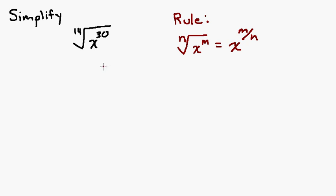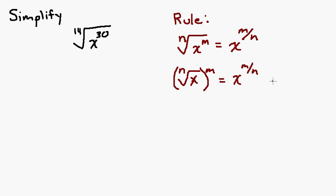Before we get started, we need to remember the rule for moving back and forth between radical form and exponent form. When we have an index n, that translates to the denominator of your exponent, and if you have an exponent on what's underneath your radical sign, that is the numerator. So the nth root of x to the m equals x to the m over n.